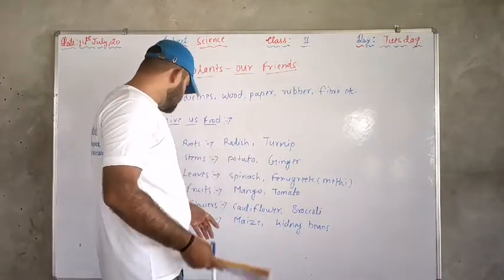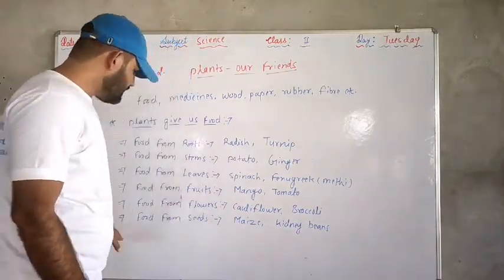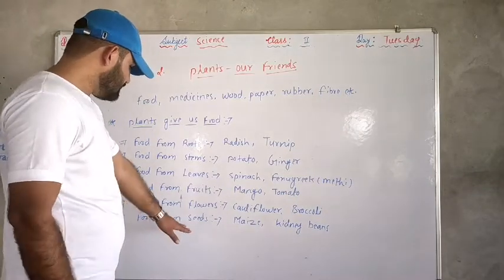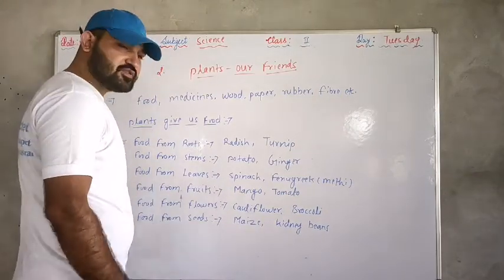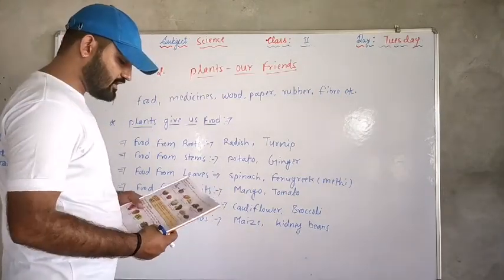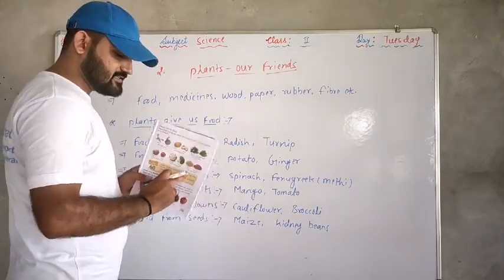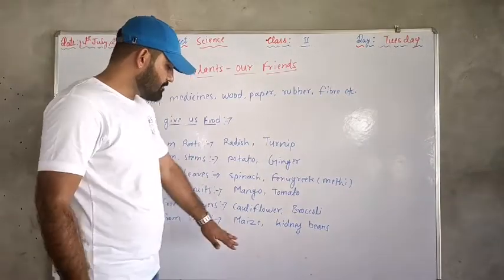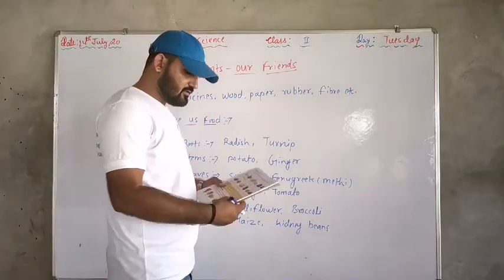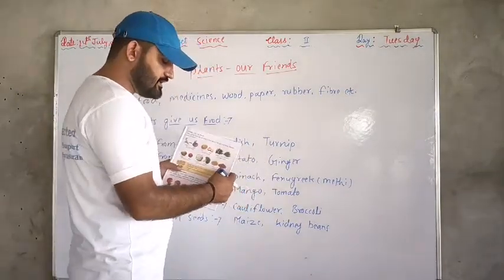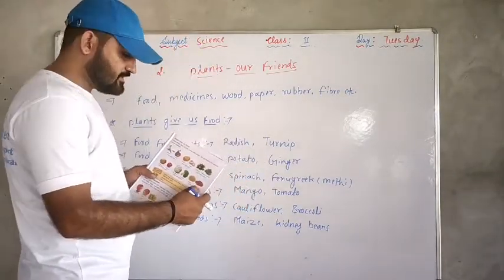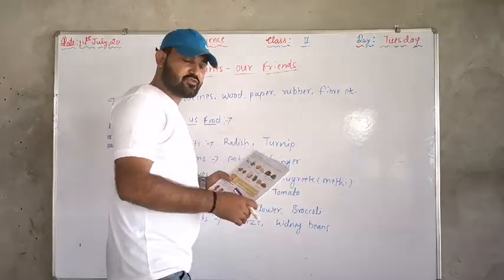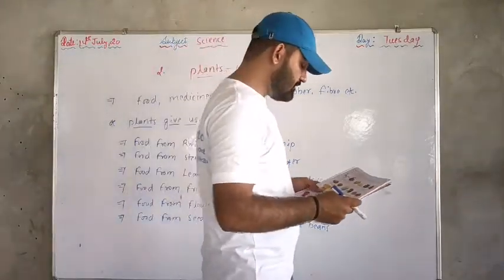Next is food from seeds. This is a category. Maize — this is an example. Next is kidney beans — this is another example of food from seeds.